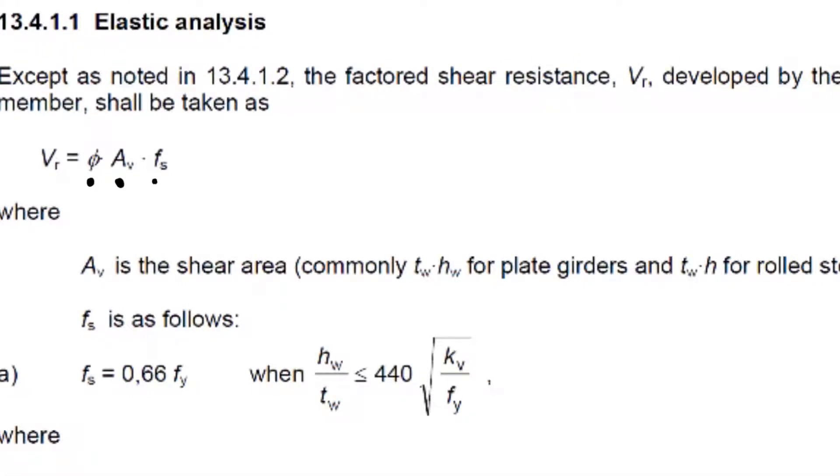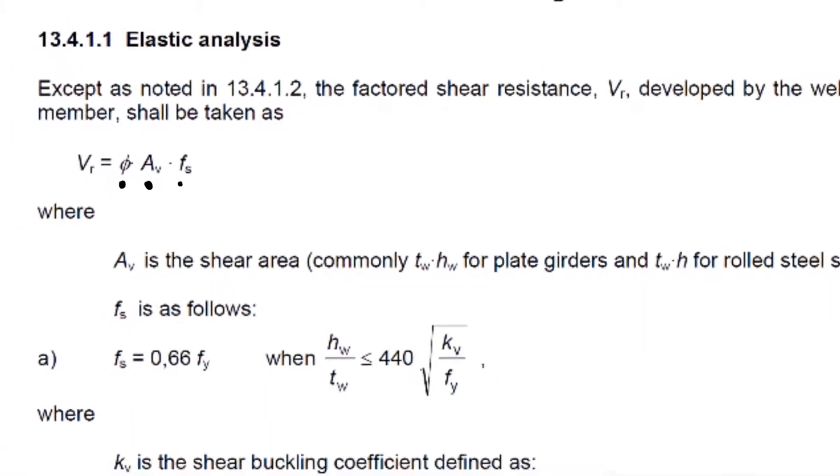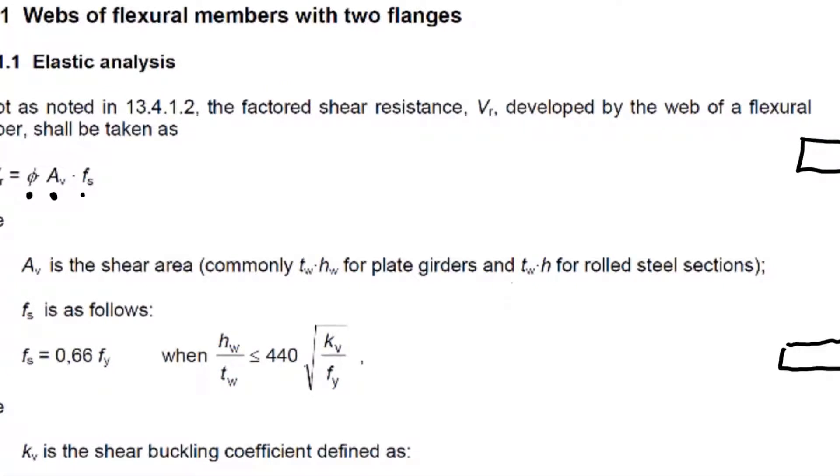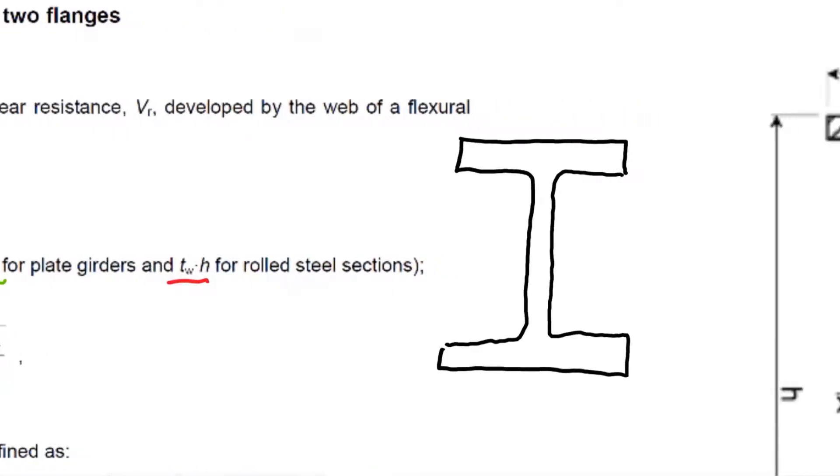Now the AV, the area of shear, is commonly TW times HW for plate girders and TW times H for hot rolled steel sections. So why the difference? Well, firstly we have a look at our section and virtually all of our shear stress is carried in this middle zone, so we use only this area from top to bottom.